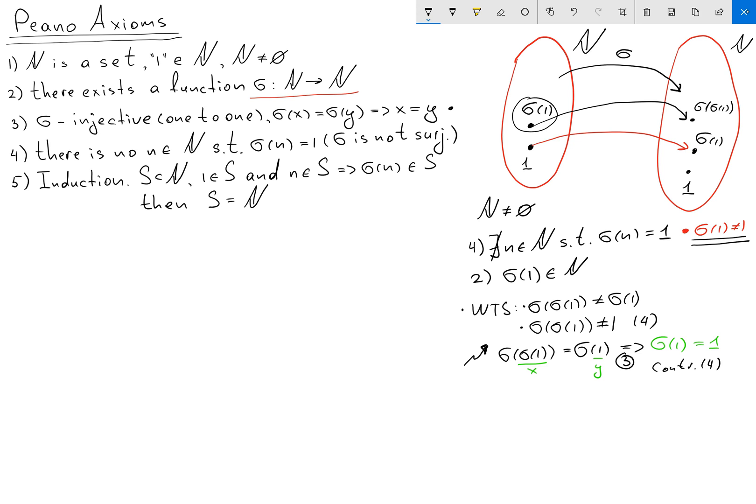So we can see that we constructed another element sigma sigma of 1. And we can continue this procedure. Then we're going to get this element on the left hand side sigma sigma of 1, and we're going to map this element again to our set N. So we're going to get our natural numbers.